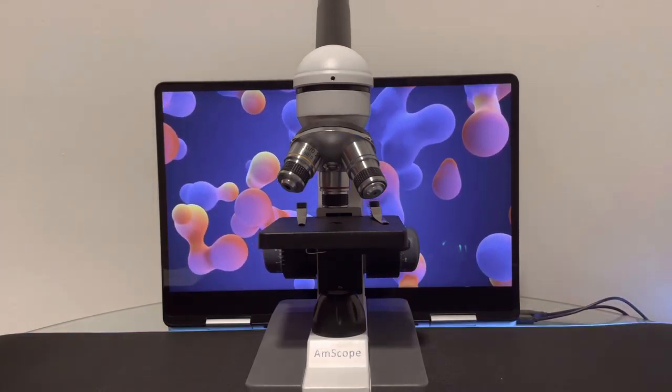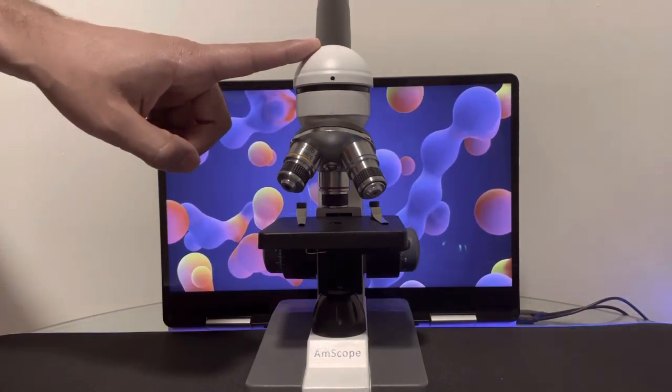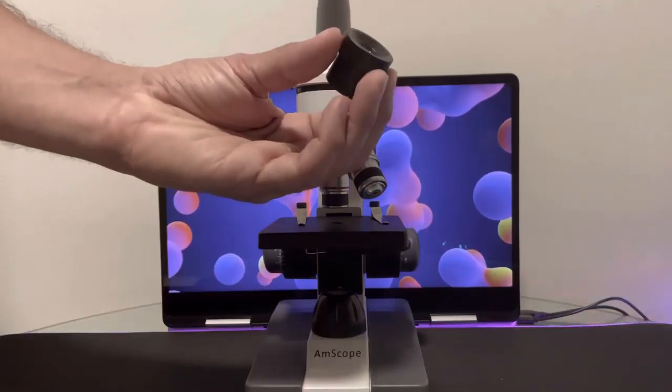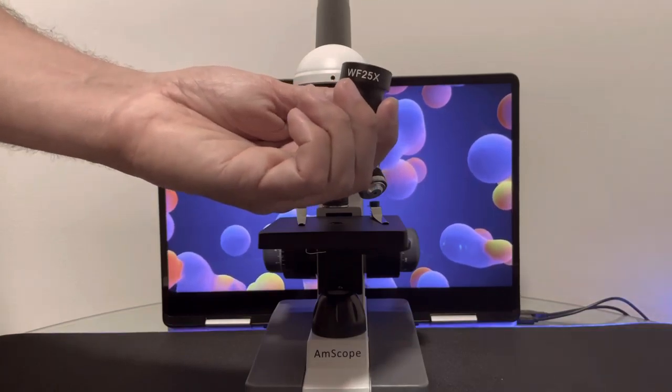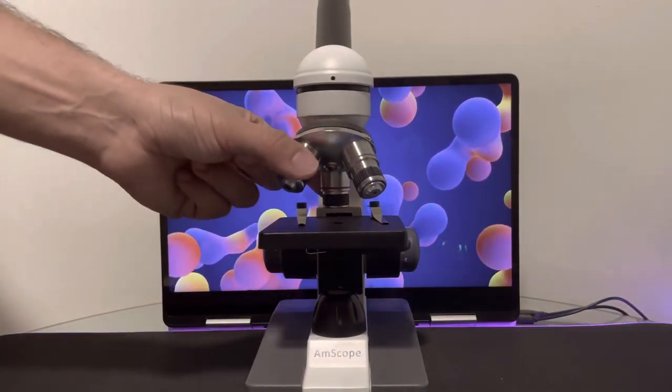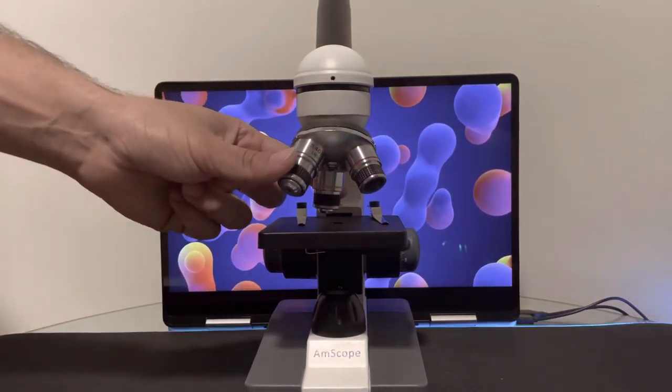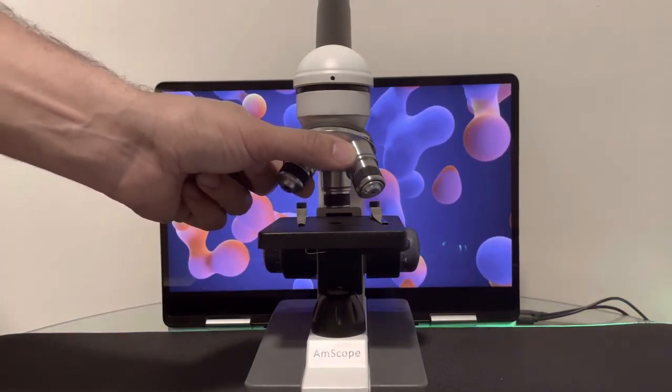We're going to be mentioning the following, and this is the head. After the head, this is the ocular lens that comes in 10x, but also has an added 25x ocular lens. Now, these are the objective lenses, and followed by these objective lenses just right above is the revolving nose piece.